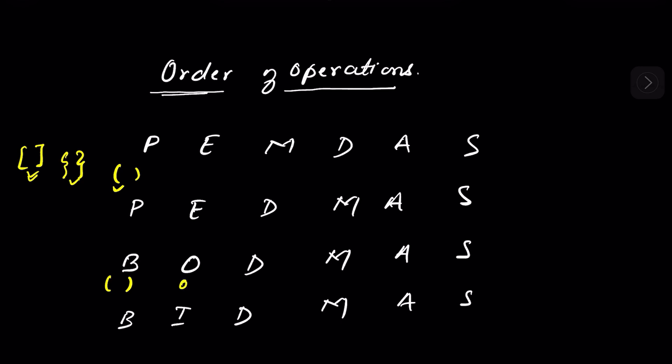'Of' means multiplication, but whenever there is 'of' and multiplication both in the equation, you have to first solve the 'of' part, then move to multiplication. Exponent means when there is power, like 2 raised to power 2, then 2 is the power of 2, or 2 raised to power 3, then 3 is the power of 2 or exponent of 2.